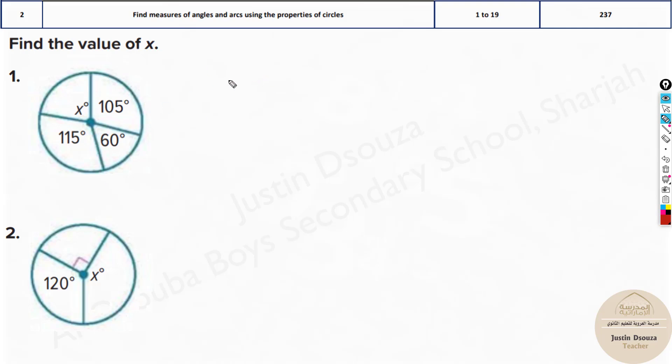We know that sum of all the angles is 360 degrees. So 360 minus 105 minus 60 minus 115 will give you the x angle. Add them all up and subtract them from 360 you should get x degrees.